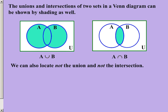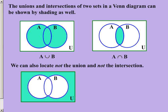And just like before, we can also look at not the union and not the intersection. From up above, you can see that everything within the sets was shaded. Now this time, everything in the sets is not shaded, and the area outside of the sets is shaded. That would be not the union.